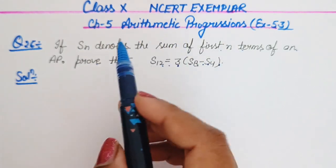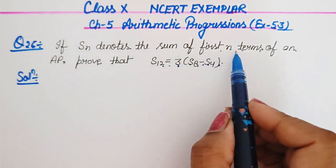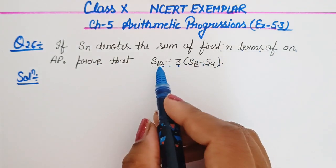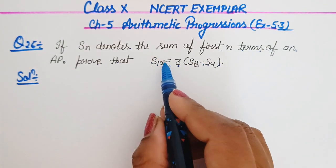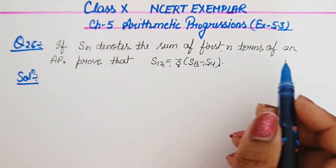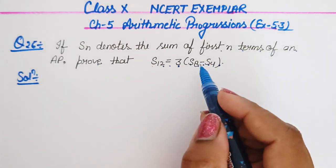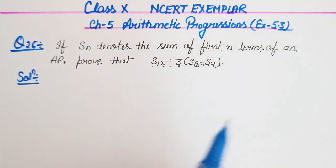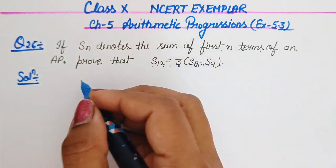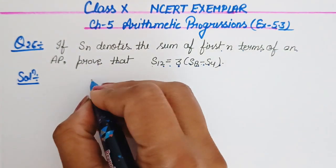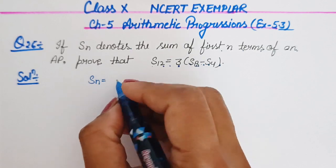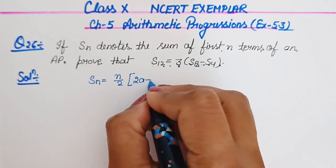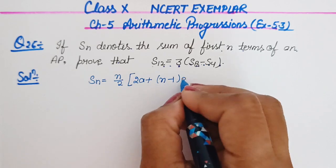Here we have given that SN is the sum of first N terms. We have to prove that the sum of 12 terms equals 3 times the difference of S8 minus S4. We know that SN is equal to N by 2 in the bracket 2A plus N minus 1 times D.